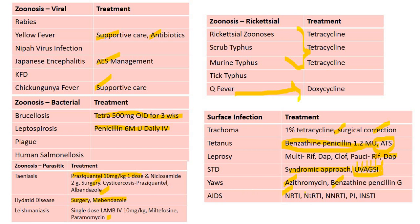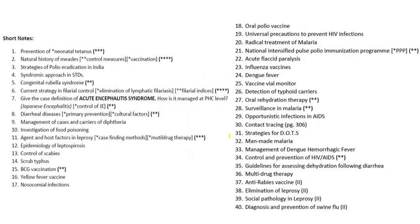For yaws: azithromycin will be helpful; benzathine penicillin G will be helpful. For AIDS, treatment includes nucleoside reverse transcriptase inhibitors, nucleotide reverse transcriptase inhibitors, non-nucleoside reverse transcriptase inhibitors, protease inhibitors, and integrase strand transfer inhibitors. Drugs ending in '-vir' are protease inhibitors, except tenofovir (nucleotide RTI) and abacavir. The zidovudine group — zidovudine, stavudine, and others — fall under nucleoside reverse transcriptase inhibitors.